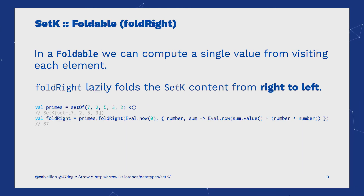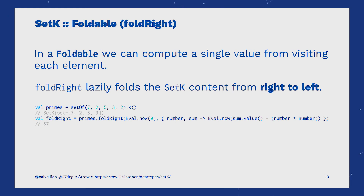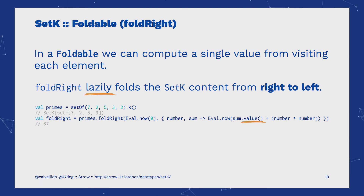In addition, the Foldable type class offers another method called foldRight. As the name implies, foldRight starts folding from the right side and processes the values in a right-to-left order. Here again, we are accumulating a power of each number of a set, but you can see some differences in its use. In contrast with foldLeft, which operates in an eager way, foldRight will evaluate its passed function lazily, only performing the computation when we call the value method. This allows us to support laziness in a stack-safe way.